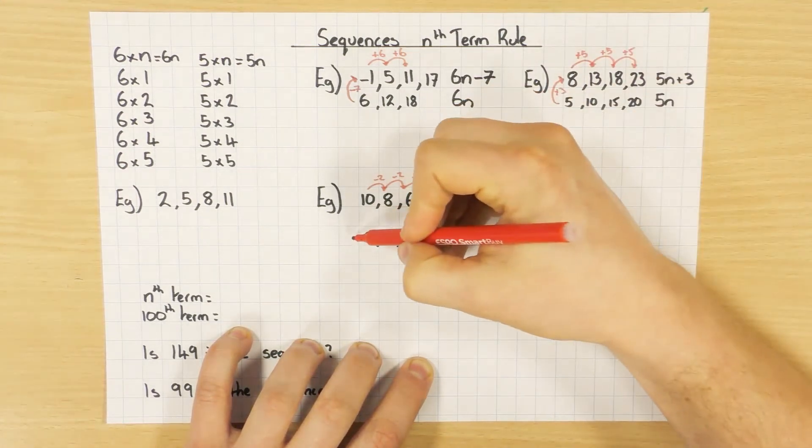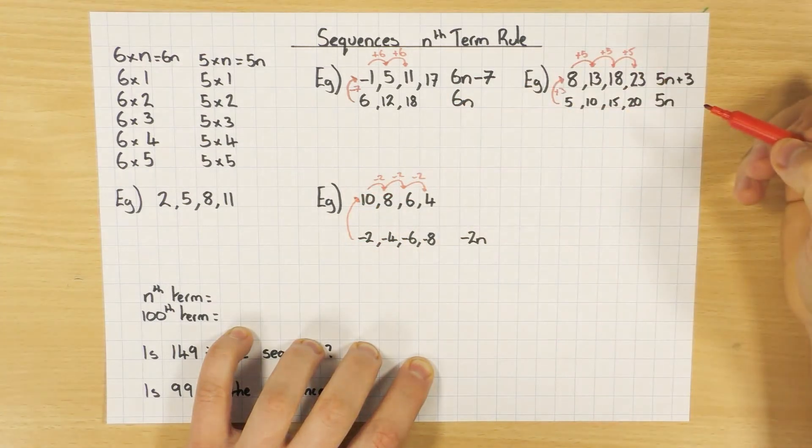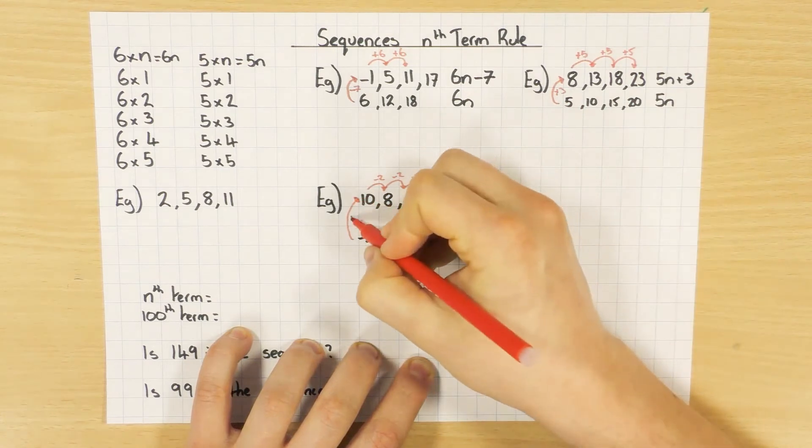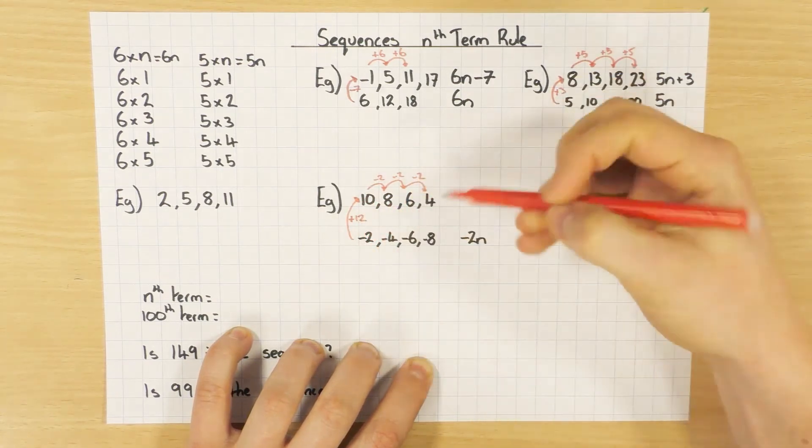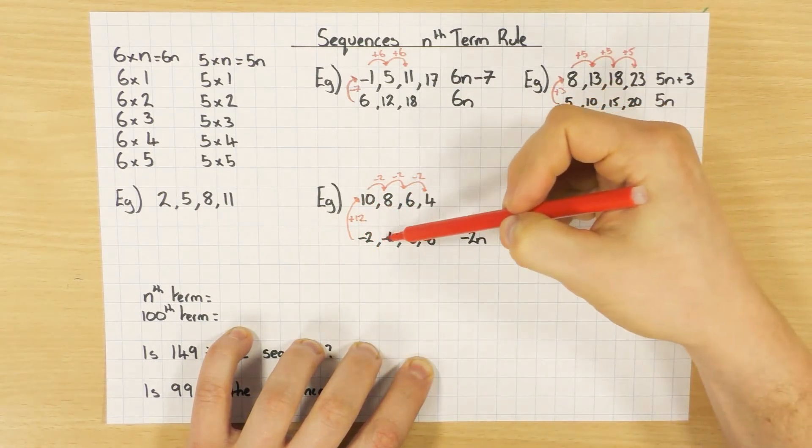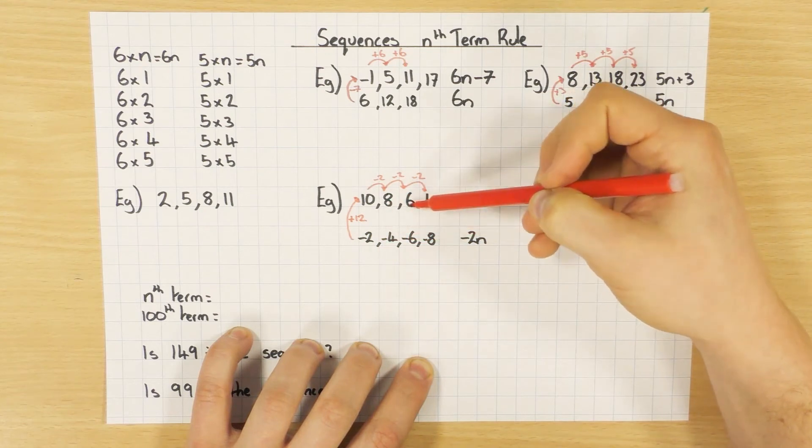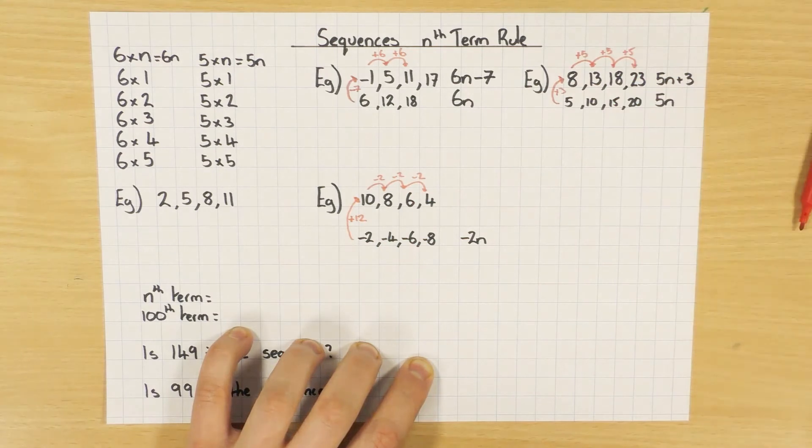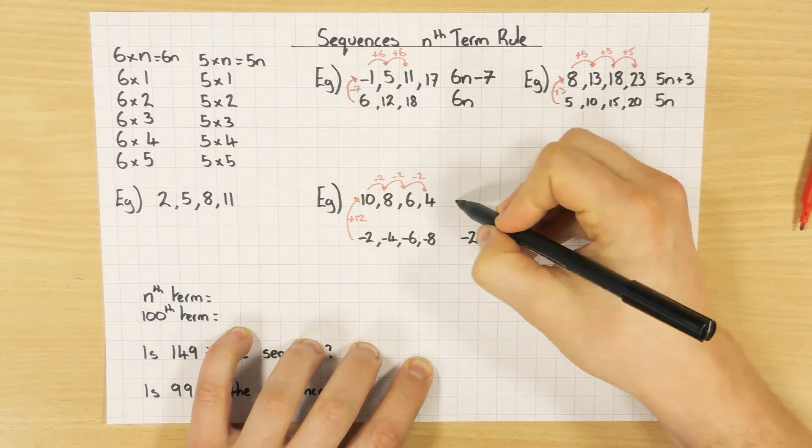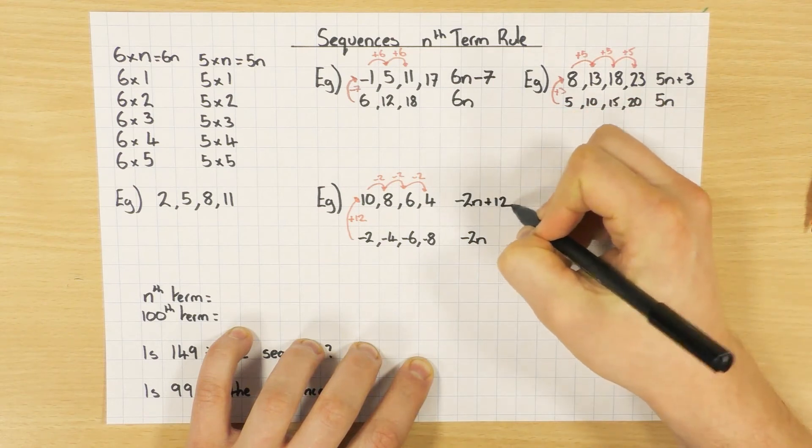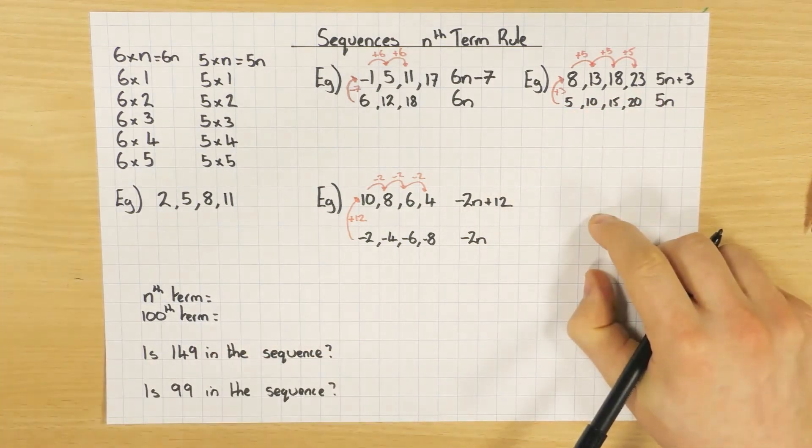So, how do I go from the minus 2 times table back to my sequence? Well, to go from minus 2 to 10, I add 12. And you can test it on all of them. Minus 4 add 12 is 8, minus 6 add 12 is 6, and so on and so forth. So, the nth term rule for this one would be the minus 2 times table, so minus 2n, and add 12. And that's the nth term rule.